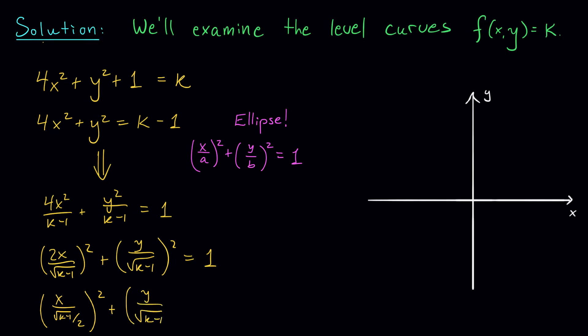This gives me 2x over the square root of k minus 1 all squared plus y over the square root of k minus 1 all squared equals 1. Finally, I move that 2 to the bottom. I get x divided by the square root of k minus 1 over 2 squared plus y over the square root of k minus 1 squared equals 1. All right, so here my a value is the square root of k minus 1 over 2. My b value is the square root of k minus 1.